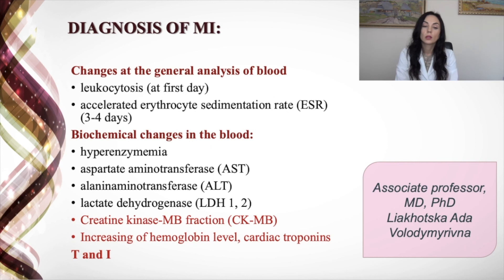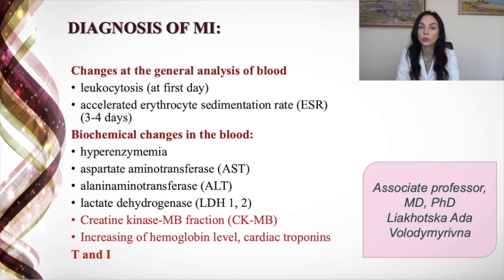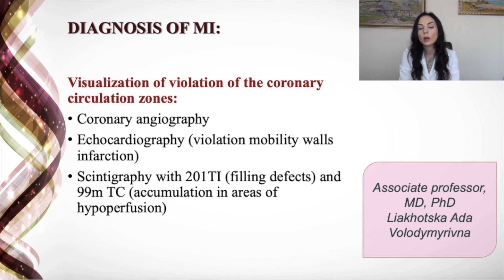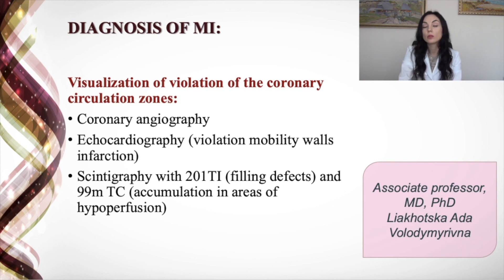Diagnostic methods for myocardial infarction beyond ECG include: general blood analysis showing leukocytosis on the first day and elevated erythrocyte sedimentation rate from 3-4 days after MI. Biochemical changes include elevated creatine kinase MB-fraction, increased troponins T and I — the most useful markers — as well as changes in AST, ALT, LDH, and hyperenzymemia. Visualization of coronary circulation zone violations can be obtained via coronary angiography, echocardiography, and scintigraphy.